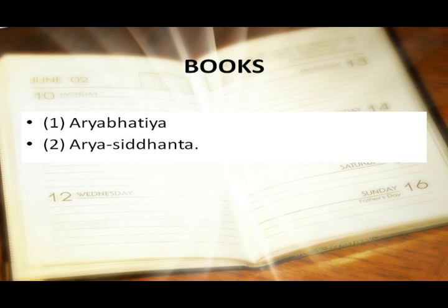At the age of 23 years, Aryabhata wrote two books on astronomy. One is Aryabhatiya and the second one is Arya Siddhanta.